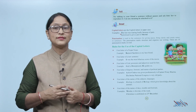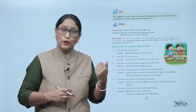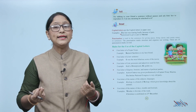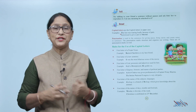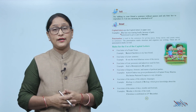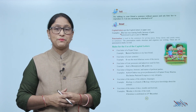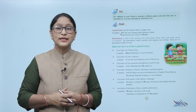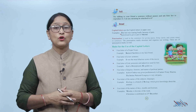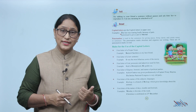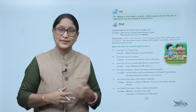Fourth: the first letter of degrees, honors, and names of political parties is always written in capital. Examples: 'Ashok Chakra was given posthumously to Captain Vinay Sharma.' 'The Indian National Congress is a very old party.' Fifth: the first letter of the names of subjects and languages is always written in capital. Example: 'Zoology is a branch of biology which gives knowledge about the animals.'